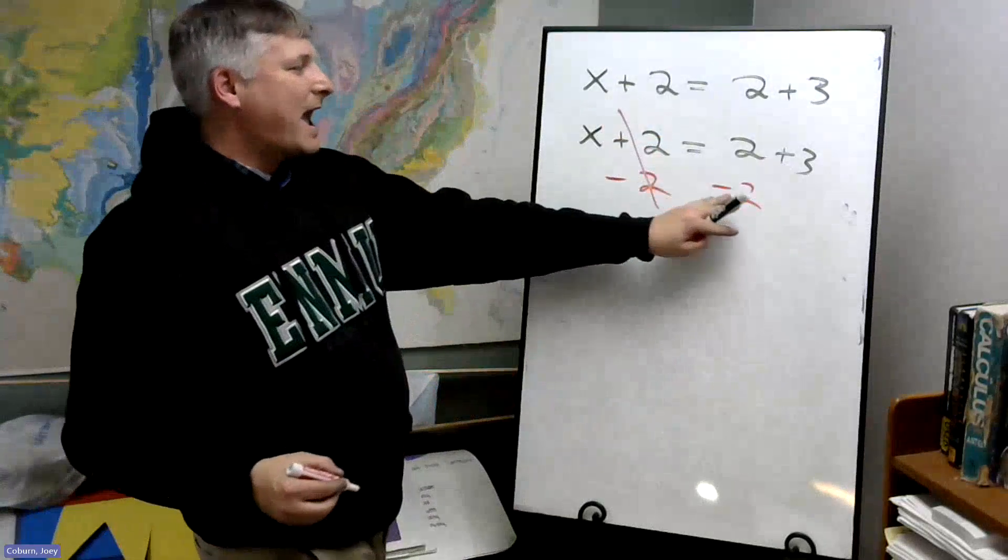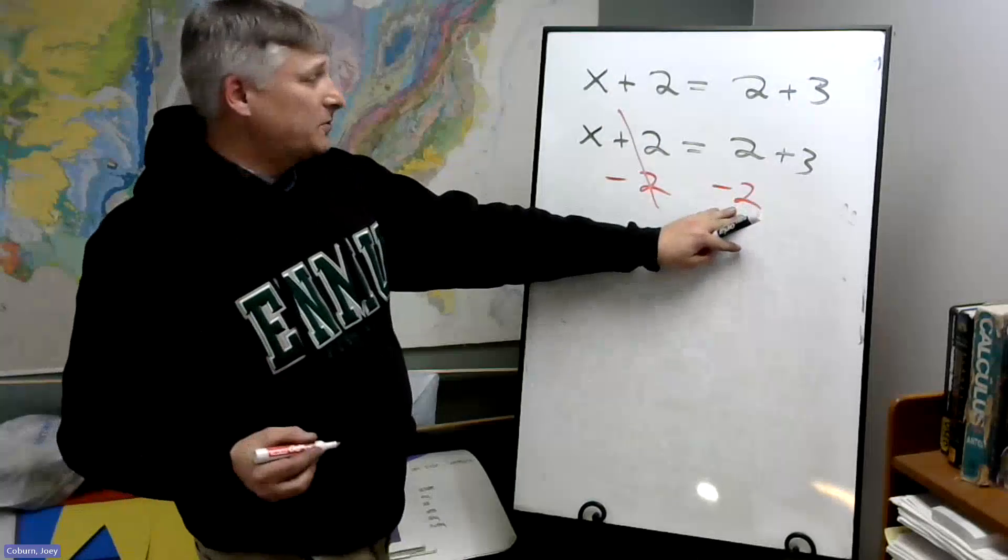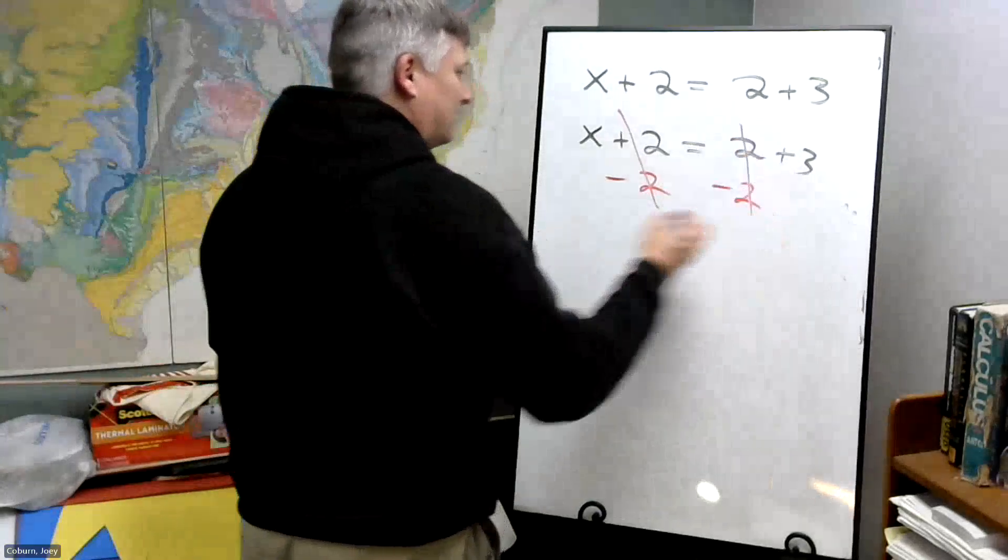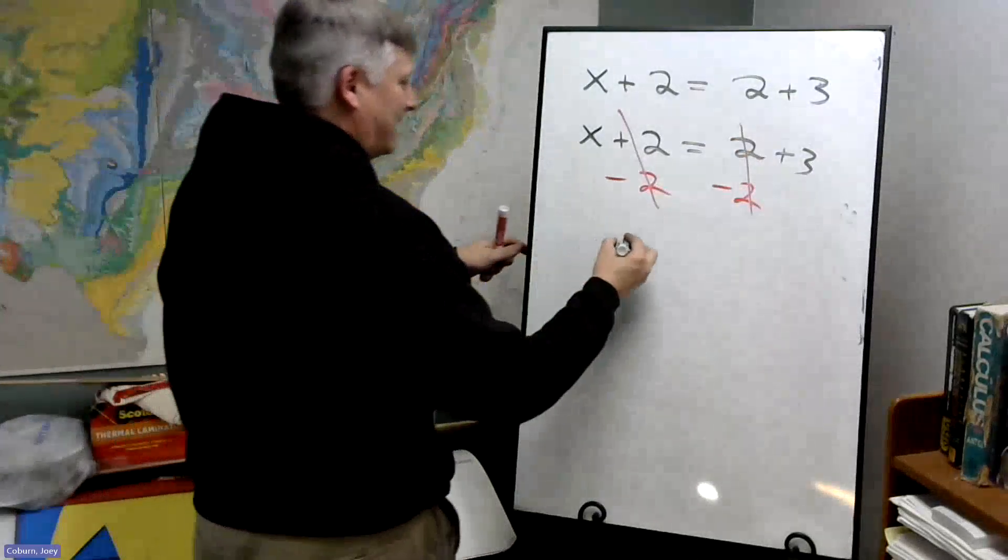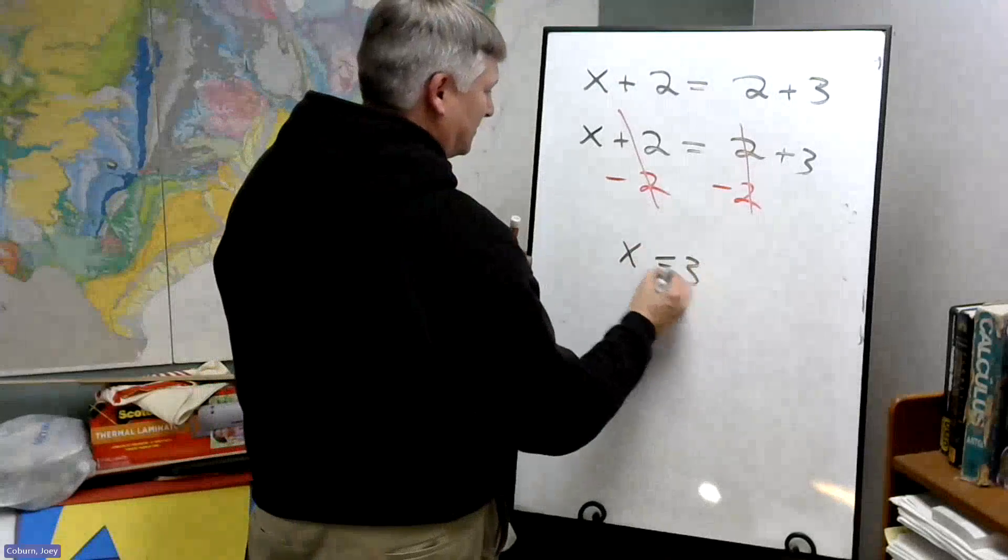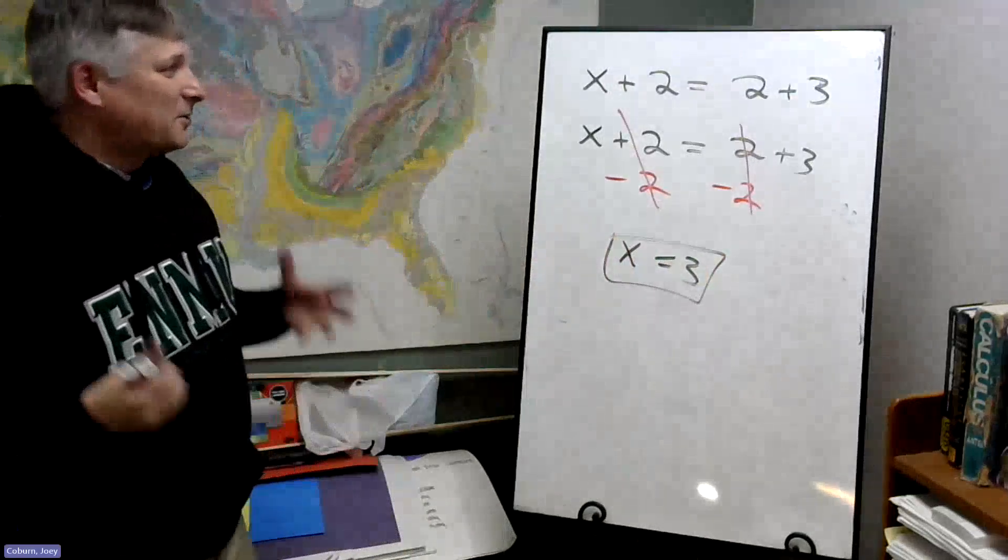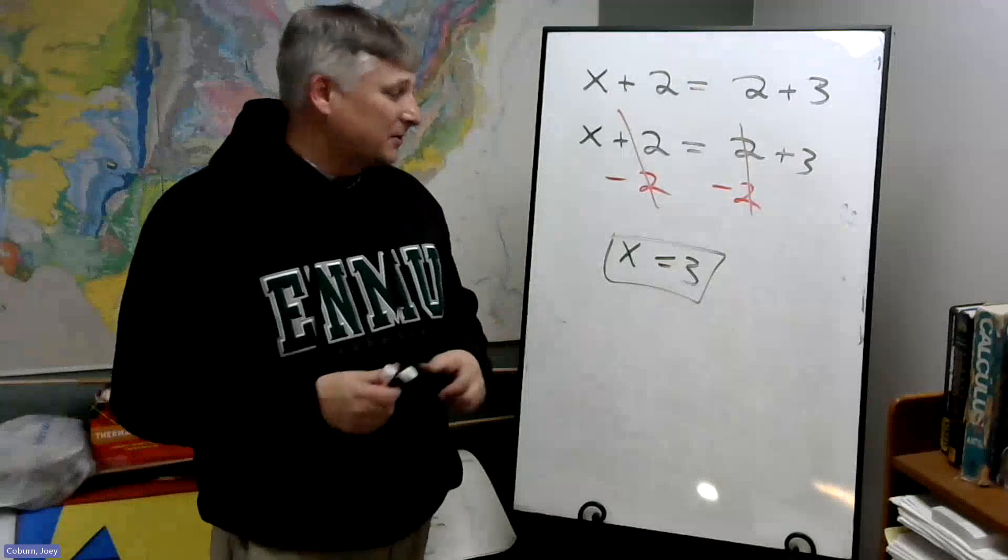But what I did on one side, I have to do to the other, remove two pounds from the other side, and that leaves X is three, and so that's how we can solve these equations.